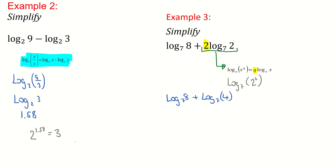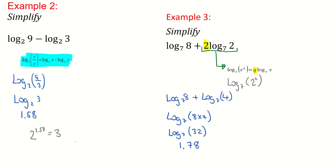Now dealing with the addition: to add logs from page 21 you multiply. So it becomes log of 8 times 4 to the base 7, which is log of 32 to the base 7. Typing that into the calculator gives 1.78. So just be careful — if there's a multiplier in front of a log, you must deal with that first before you can add or subtract.